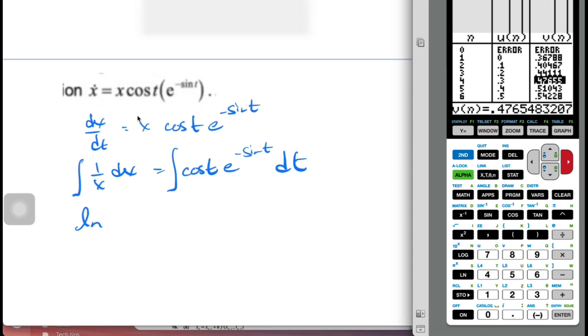So this is ln x. Well, here I can do a u substitution, so u is going to be minus sine t. So du will be minus cosine t dt, and so then I can say this is minus e to the negative sine t plus c.